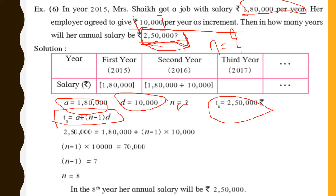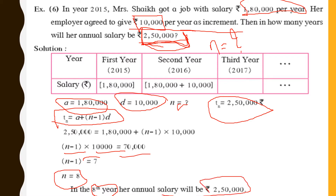We know t_n = a + (n − 1) × d. Putting the values: 2,50,000 = 1,80,000 + (n − 1) × 10,000. This gives (n − 1) × 10,000 = 70,000, so n − 1 = 7, therefore n = 8. After 8 years her annual salary will be 2,50,000.